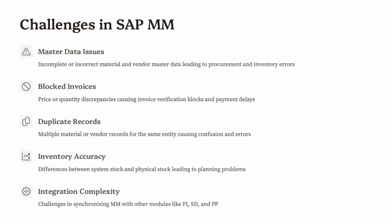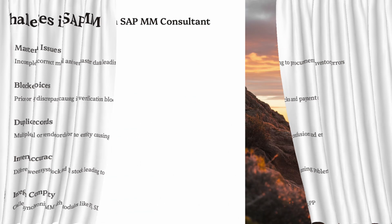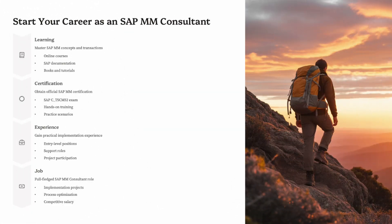Section 6: Common Challenges in SAP MM. Even with great systems, issues occur: duplicate vendor or material entries, incorrect movement types during GR or GI, mismatches between PO, GR, and invoice, integration gaps between MM and FI or SD, and data inconsistency in master records. These lead to blocked invoices, stock errors, and reporting issues. The solution: regular audits, master data governance, and well-trained users.